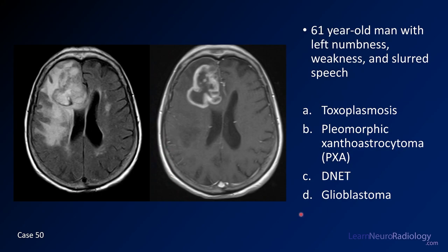Case number 50 is a 61-year-old man with left-sided numbness, weakness, and slurred speech. We have a FLAIR and a post-contrast image. Your choices are toxoplasmosis, pleomorphic xanthoastrocytoma (PXA), DNET, or glioblastoma.